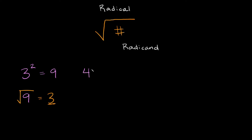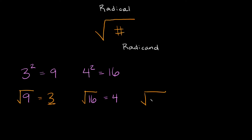So again, if we started with 4 squared, 4 squared is the same thing as 4 times 4, which is equal to 16. But if I asked you what is the square root of 16, your answer would simply be equal to 4, because we're just saying what number times itself is equal to 16 — and that would be 4. So what's the square root of 25? What number times itself is equal to 25? That would be 5, because 5 times 5 is equal to 25. And just one more for good measure: the square root of 36 would be equal to 6, because 6 times 6 is equal to 36.